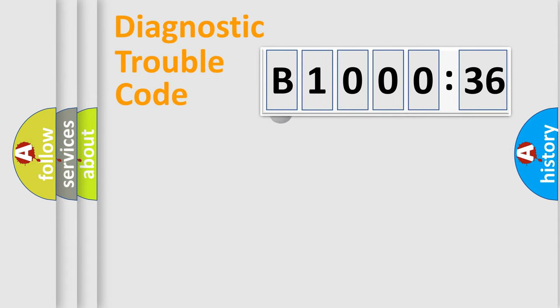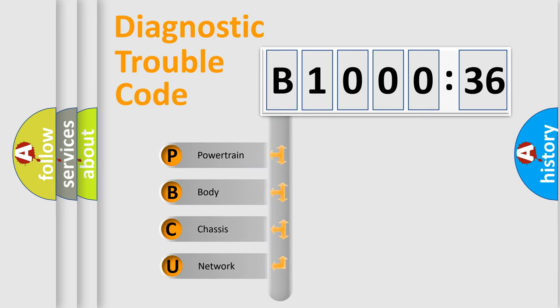First, let's look at the history of diagnostic fault code composition according to the OBD2 protocol, which is unified for all automakers since 2000. We divide the electric system of automobile into the four basic units.